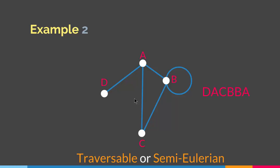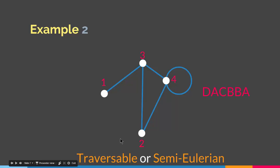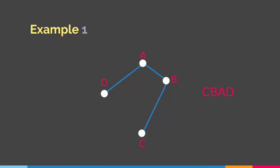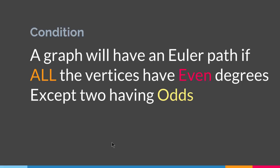Now we know what an Euler path is, but is there a way we can tell whether a graph has an Euler path or not? Well yes there is. If you observe this particular graph and look at the degrees of its vertices: this vertex has degree one, this vertex has degree three, this one has degree four, and this one has degree two. So we have two odd degrees and two even degrees. Looking at our first example: this vertex has degree one, this one has degree two, this one has degree two, and this one has degree one — again two odd degrees and two even degrees.